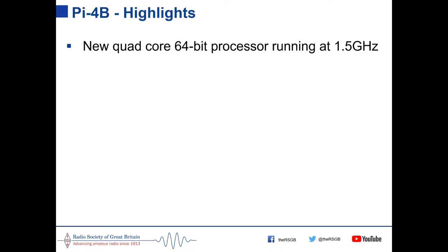The Pi 4 uses a brand new all-new quad-core 64-bit processor running at 1.5 GHz, as the previous technology had reached its limit. Various RAM models are available: 2, 4, or 8 gigabytes. For amateur radio work, you rarely need more than 2 gigabytes — most amateur radio programs are very conservative in memory use, unlike Windows machines.